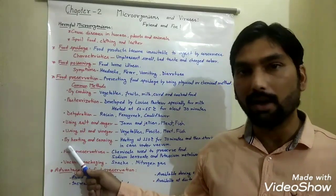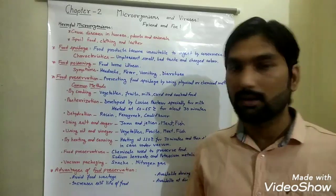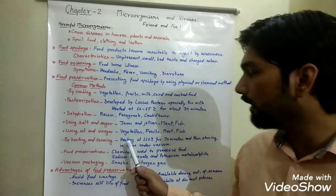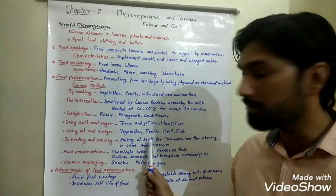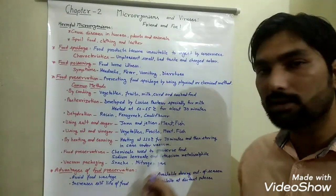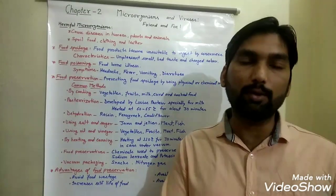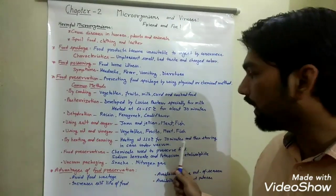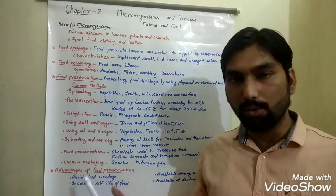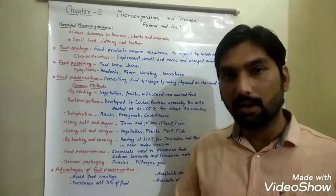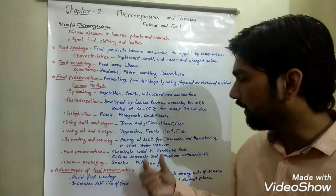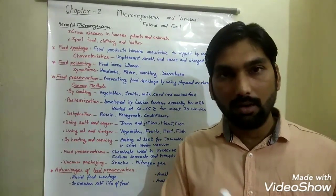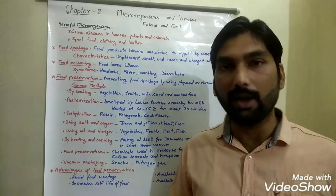The next method to preserve food is heating and canning. Some food materials are heated at 110 degrees Celsius for about 30 minutes to kill all microbes present, then stored in metallic cans. During the storage process, air is removed from the cans and a vacuum is created to inhibit the growth of new microbes.